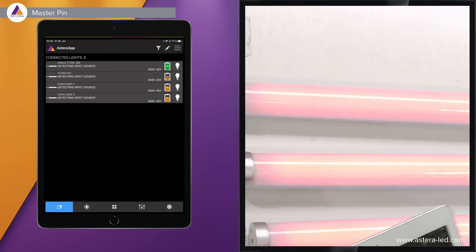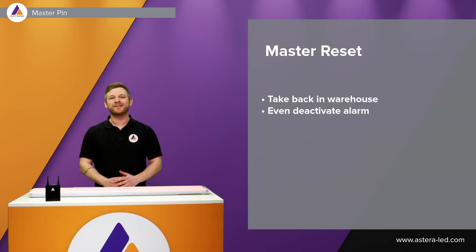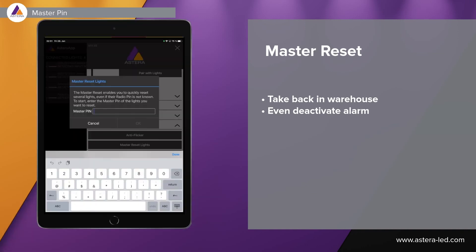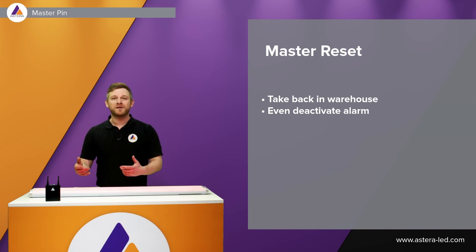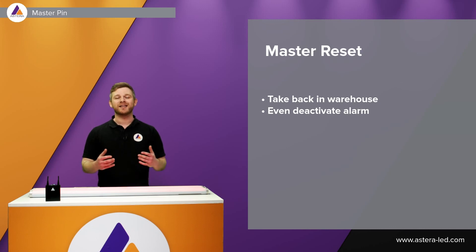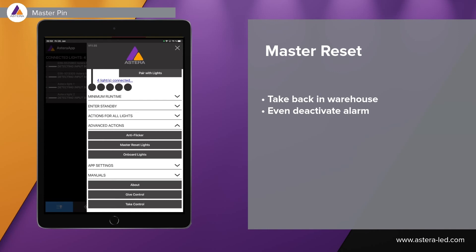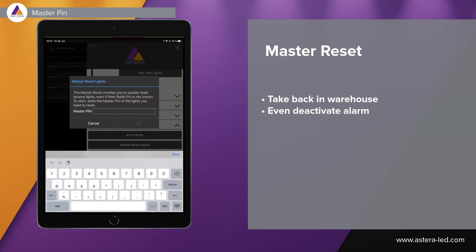It is recommended to set this master pin on all lights when you receive a new set — whether eight or a bunch of Astera lights. Once the master pin is set in each light — either through manual onboarding or the onboarding assistant — you can do a master reset, making it easier to take lights back in the warehouse. Also, if somebody changes the radio pin or the theft alarm is on, the master reset is also the way to get the lights out of permanent theft alarm. It is important that you have the same master pin on all lights in your warehouse to make the whole process easy.